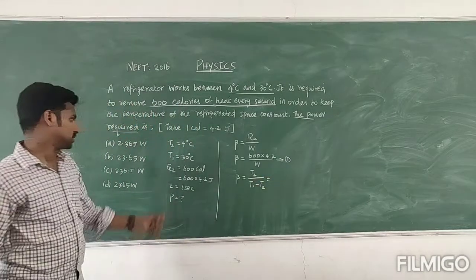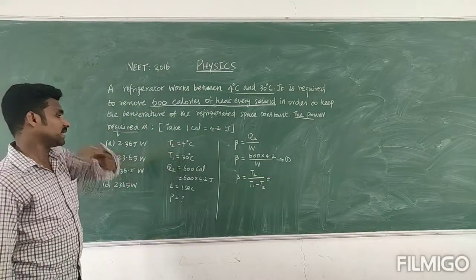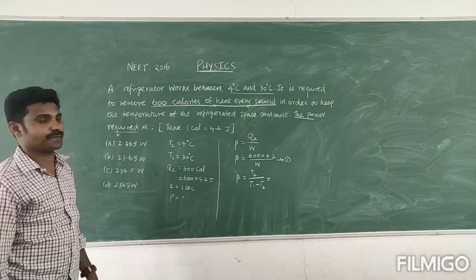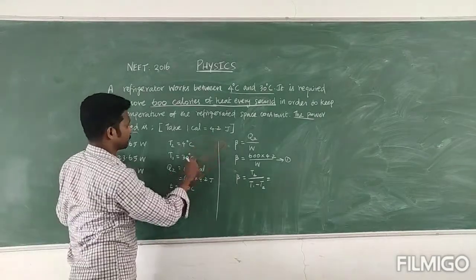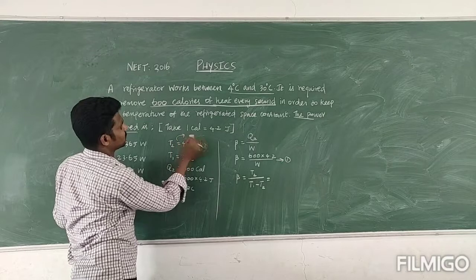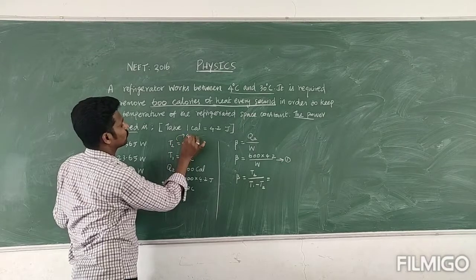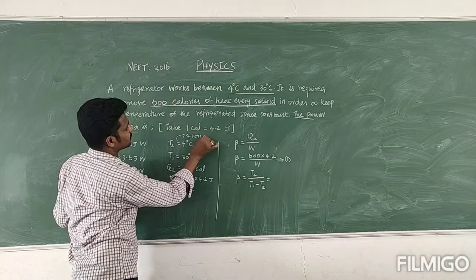So here T2 value 4 degrees Celsius, but you should convert it into Kelvin. You must add 273. So 4 plus 273, that is 277 Kelvin. So that is T2 value.